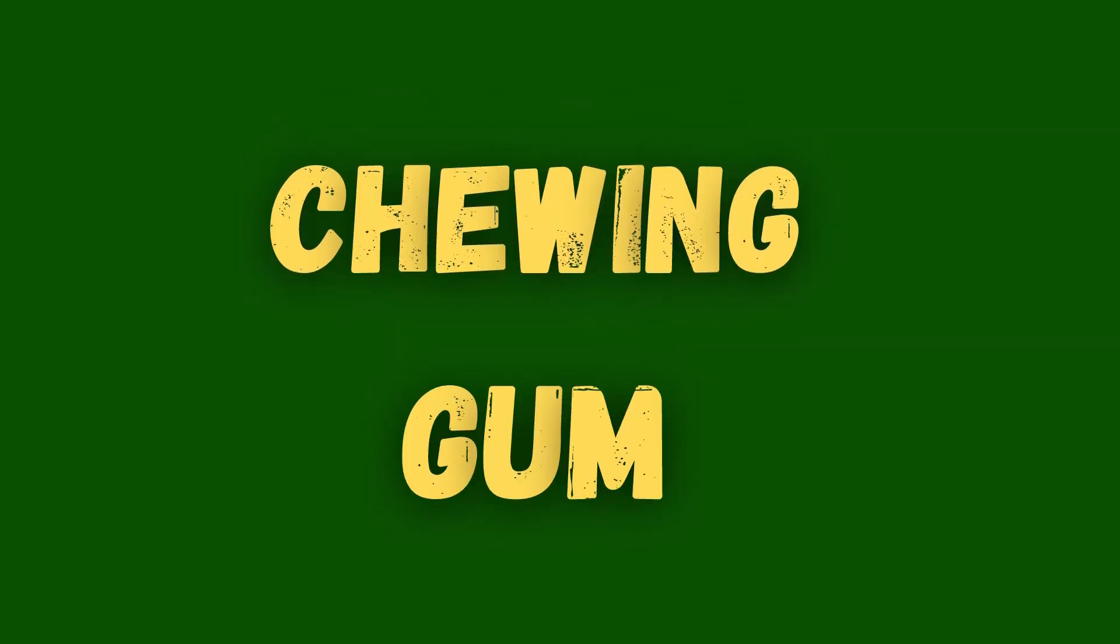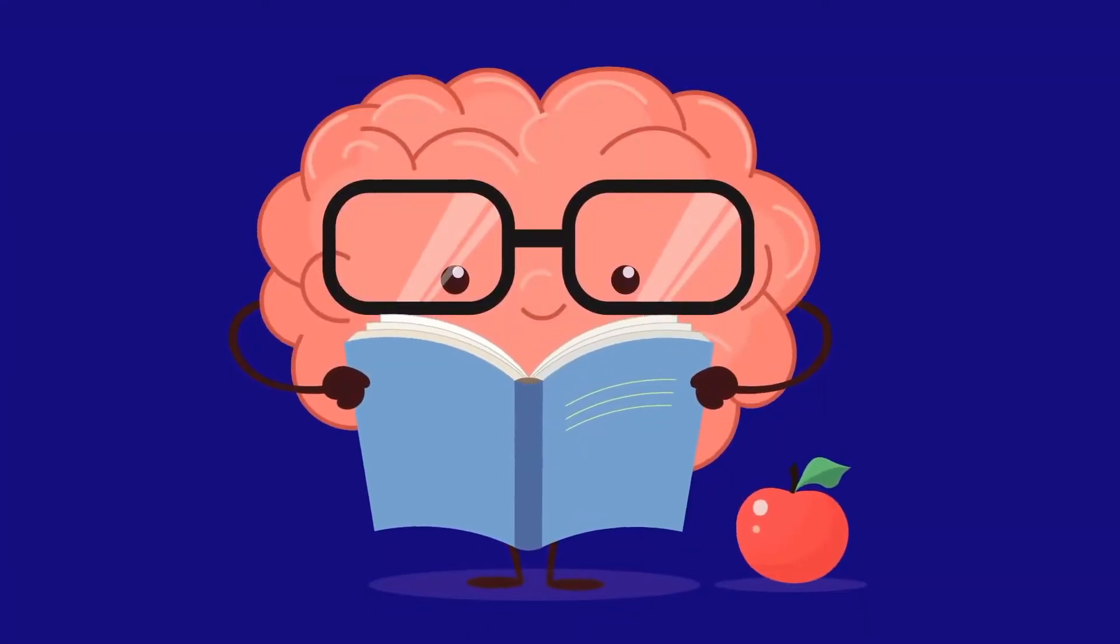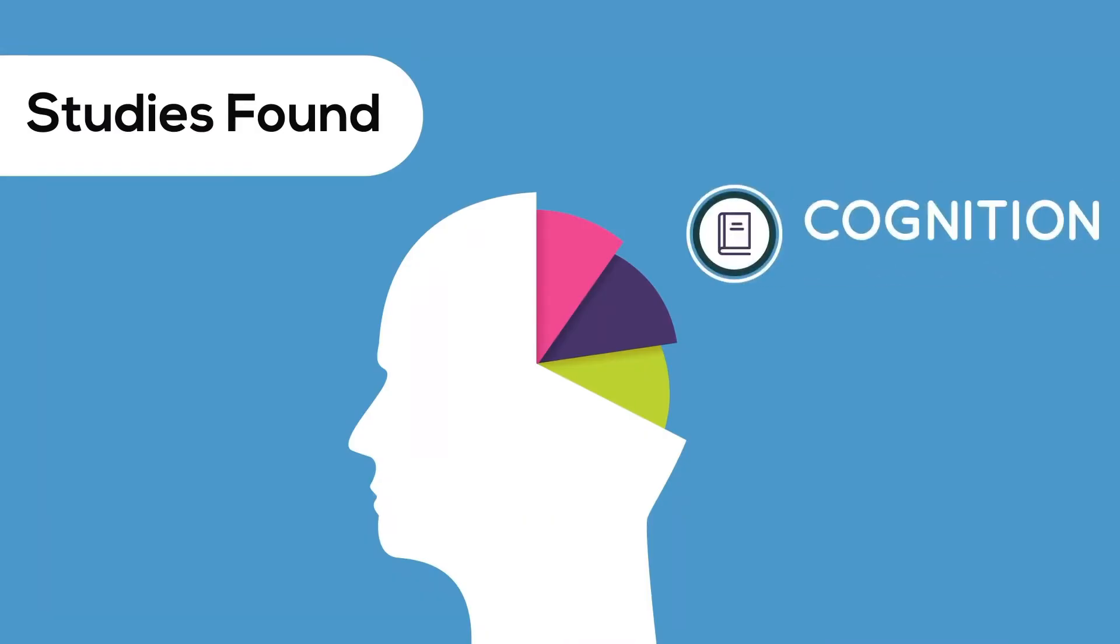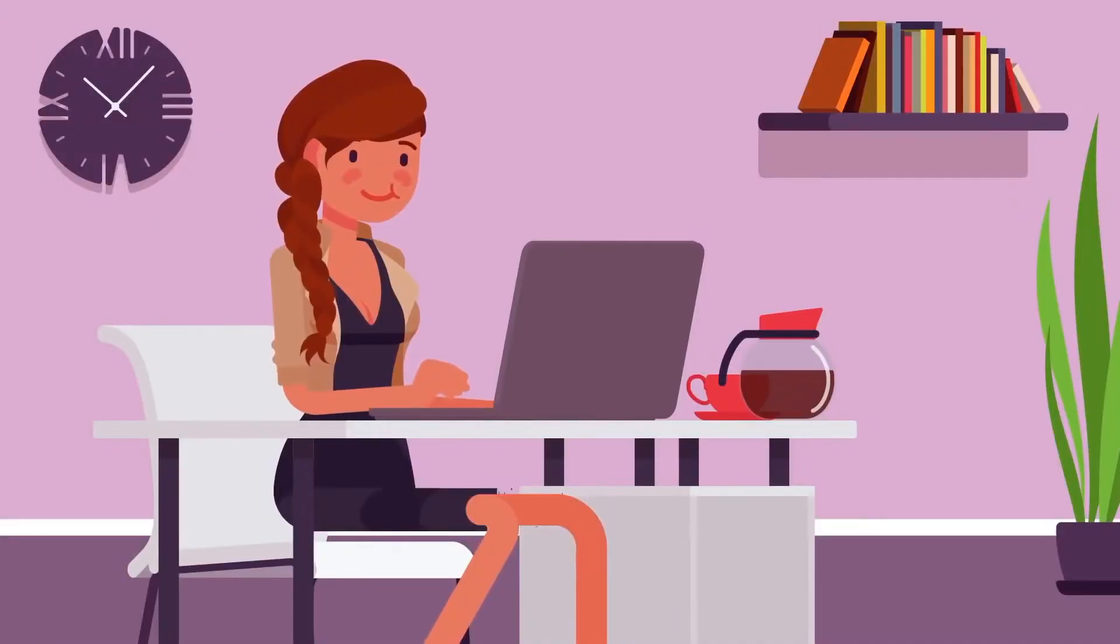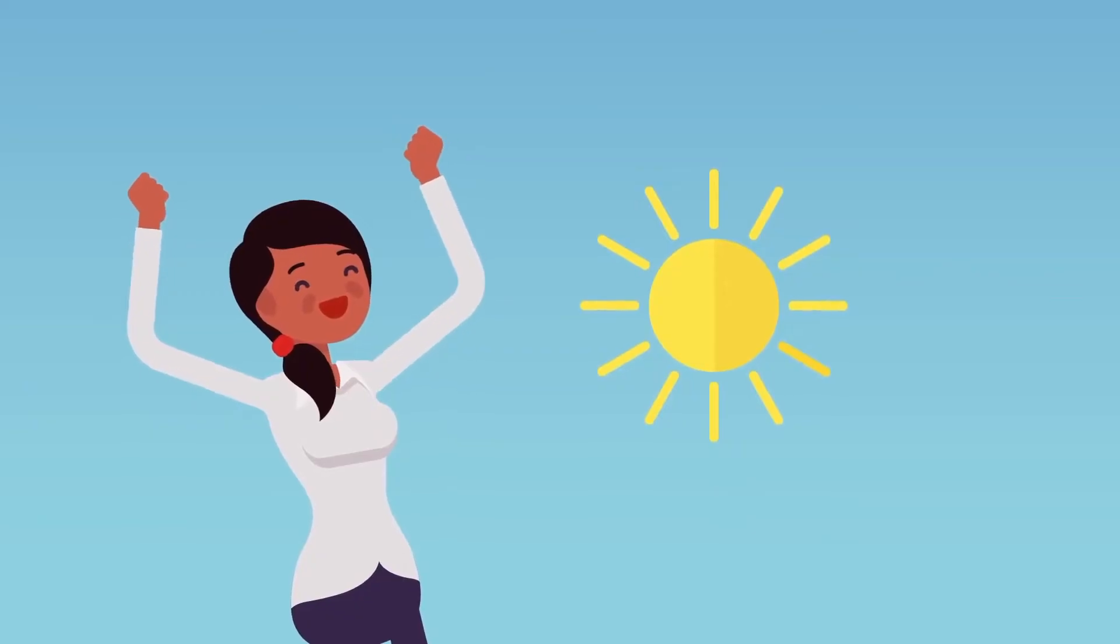Number 4. Chewing Gum. Chewing gum can help people learn faster by providing cognitive benefits that aid in stress reduction, improved concentration, and increased productivity.